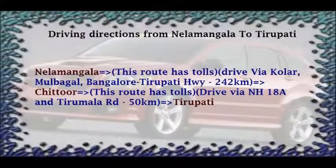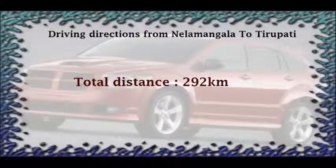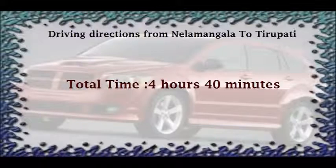Neelamangala to Chithur is 42 km, Chithur to Thirupati is 50 km. Total distance is 292 km. Total time: 4 hours 40 minutes.